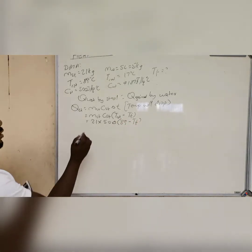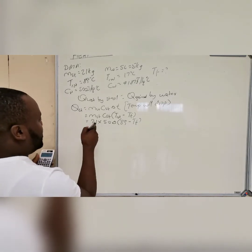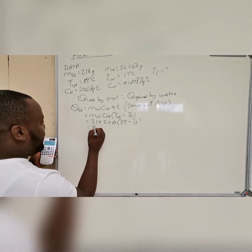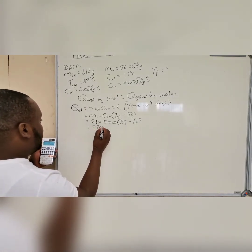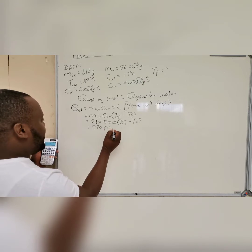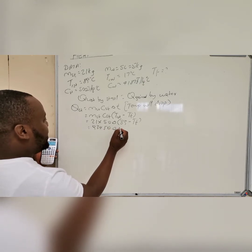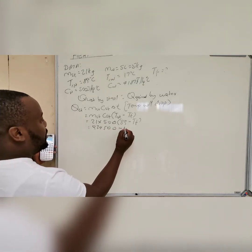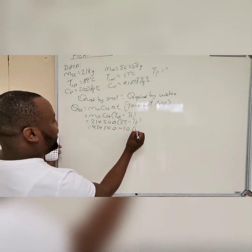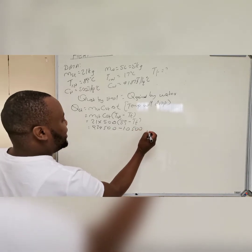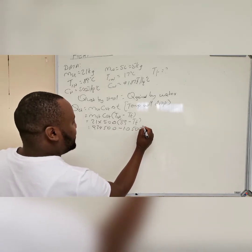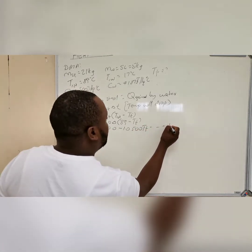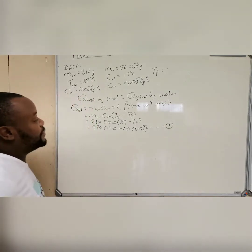When you work that out, you get: 21 × 500 × (89 minus Tf), which gives 10,500 × (89 minus Tf). Expanding: 934,500 minus 10,500 Tf. This is equation number one.